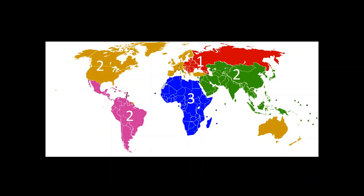You might have noticed that there is good regional diversity within the non-permanent membership, and that's not a coincidence — there's actually a regional quota system. This map shows you what those regions are and how many seats each region is allotted. Africa always has three non-permanent members, Latin America always has two, Eastern Europe always has one, Asia always has two, and finally the catch-all remaining group — the Western, European, and Others group, that's the actual name of it, WEOG — they have two.